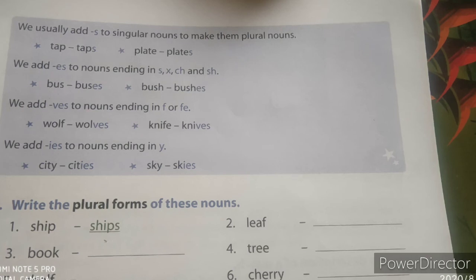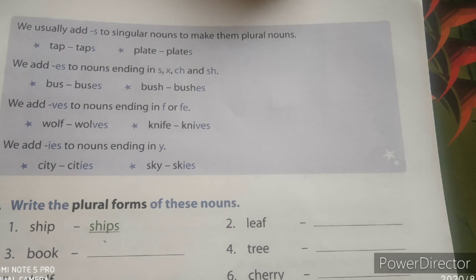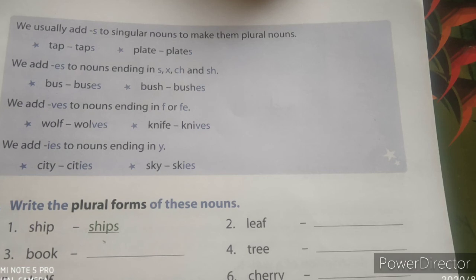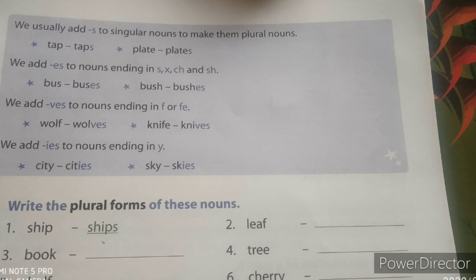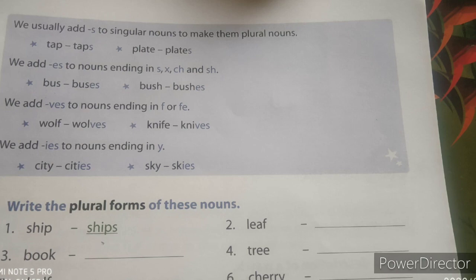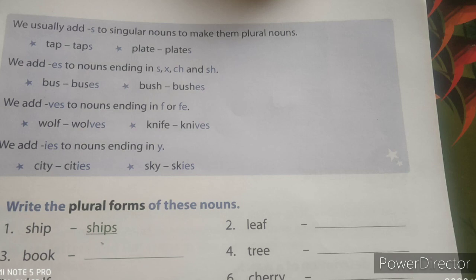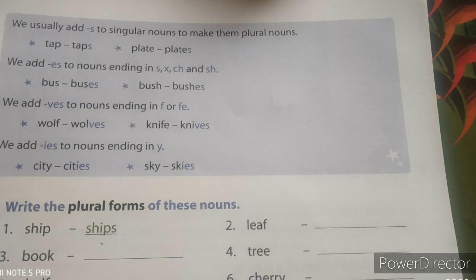ओके children, समझ में आया आपको? Next, जो exercise दी गई है उसे आप complete कीजिएगा जो आपके book में दी गई है: write the plural forms of these nouns. इन nouns के आपको plural forms बनाने हैं. जैसे sheep — example set किया हुआ है — sheep में 's' लगा हुआ है. उसी तरह leaf का leaves हो जाएगा, हमने पढ़ा है न — 'f' आता है तो हम 'ves' लगाते हैं. Book का books हो जाएगा.